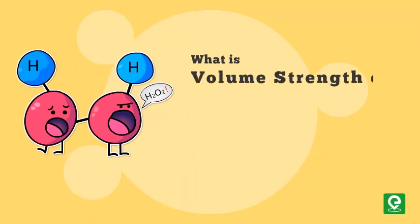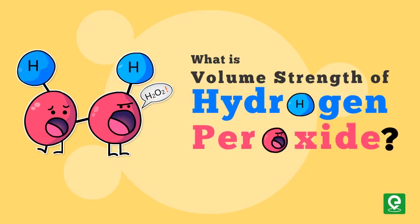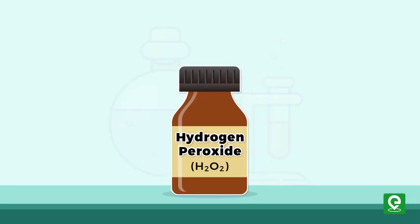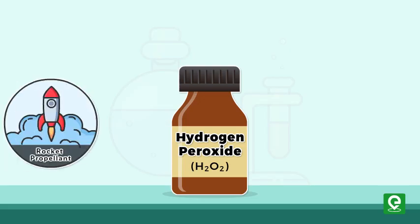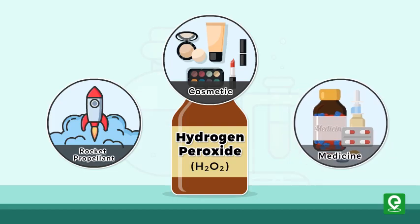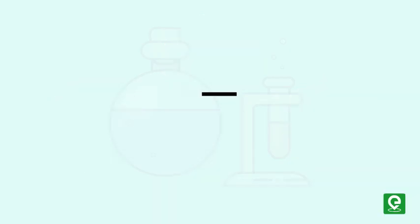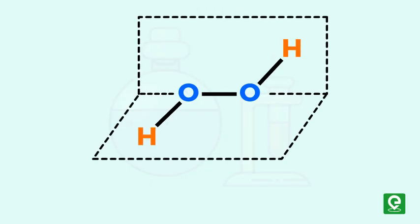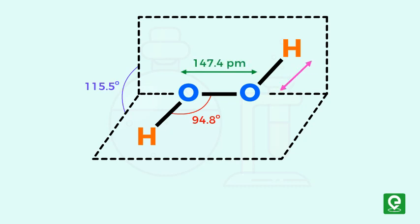What is volume strength of hydrogen peroxide? Hydrogen peroxide H₂O₂ is a colorless liquid used principally for bleaching and in the manufacture of other chemicals, as a rocket propellant, and for cosmetic and medicinal purposes. Hydrogen peroxide has each oxygen atom connected to the other oxygen and to one of the hydrogen atoms.